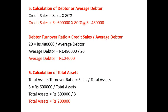Next, calculation of average debtors. We have calculated the debtor turnover ratio as 20 times. The formula for debtor turnover ratio is credit sales divided by average debtors. Credit sales is 80% of total sales: 6,00,000 × 80% = 4,80,000. So, 20 = 4,80,000 ÷ average debtors. Therefore, average debtors = Rs. 24,000.